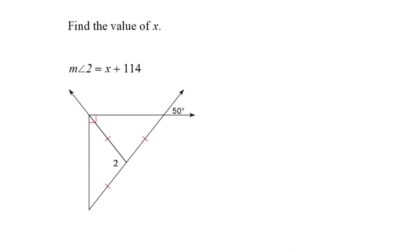We have two isosceles triangles next to each other making a 90 degree angle in the corner. The only number given is this 50 degree angle on the outside. We need to find x where angle 2 is x plus 114. I need to figure out all these angles starting with 50 degrees.